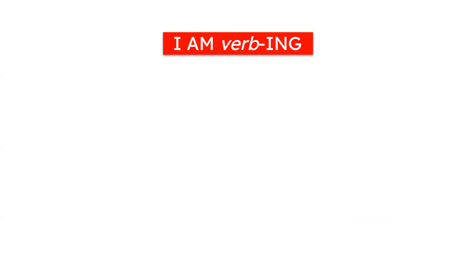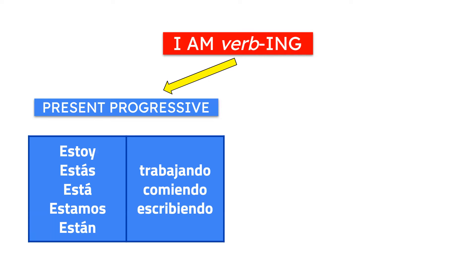Why is it important to be aware of this structure? Well, for two reasons. Usually when we learn Spanish we find the equivalence for this structure, and this is called the present progressive — el presente progresivo. We use the verb estar conjugated in all the persons we need, followed by the verb in its gerund form. The -ing ending — in Spanish, -ando or -iendo — is called gerund.